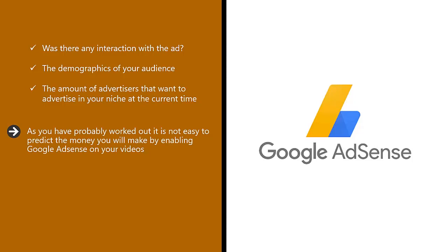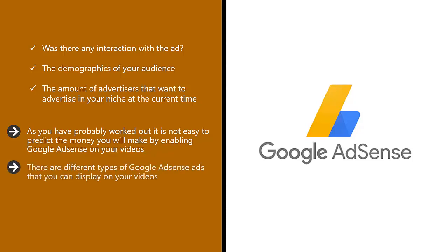It is not easy to predict the money you will make by enabling Google AdSense on your videos, but you don't have to worry about those factors other than trying to get as many views to your video as possible. There are different types of Google AdSense ads that you can display on your videos. One of the most common is a standard banner displaying at the bottom of the video.